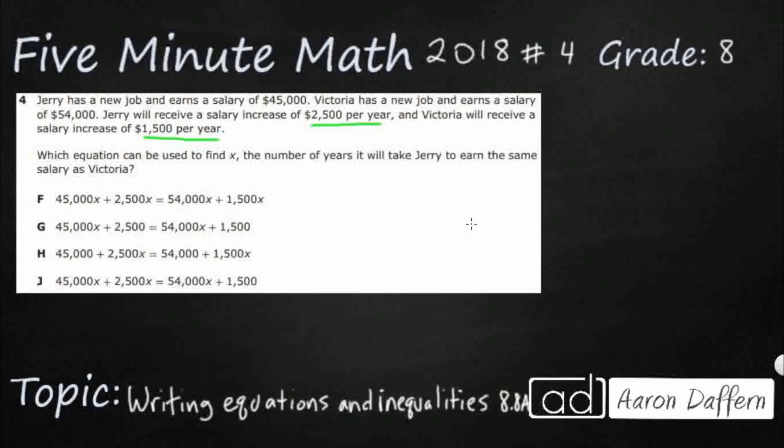So how many years will it take? X is going to be our number of years for Jerry to earn the same as Victoria. So that same is going to be our equal sign. All right, so we are looking for, I want my J to equal V. Simple as that. I want Jerry's salary to equal Victoria's salary.